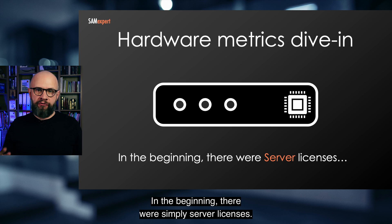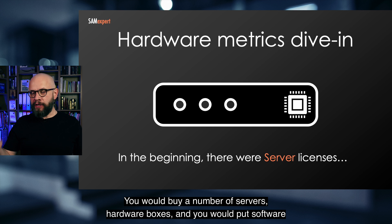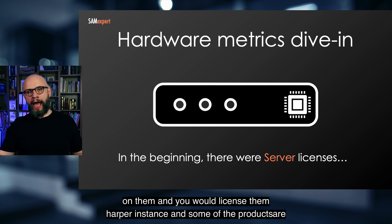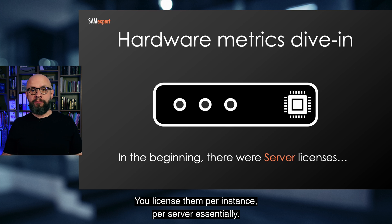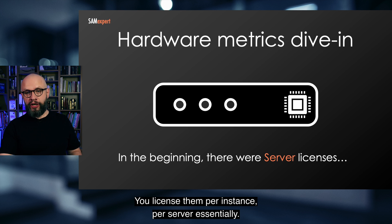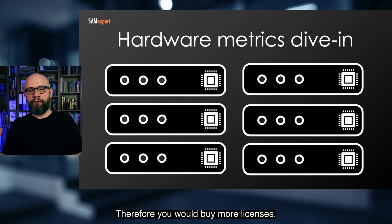In the beginning, there were simply server licenses. You would buy a number of servers — hardware boxes — put software on them, and license them per instance. Some products still retain this same licensing model, licensed per instance, per server essentially. To scale, you would buy more servers and therefore buy more licenses.